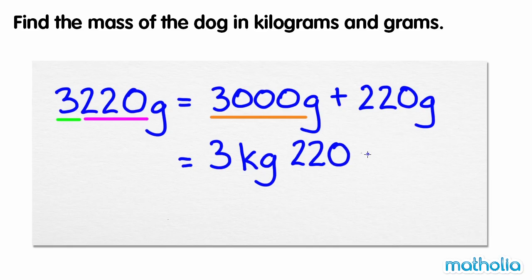So 3,000 grams plus 220 grams equals 3 kilograms, 220 grams. The mass of the dog is 3 kilograms, 220 grams.